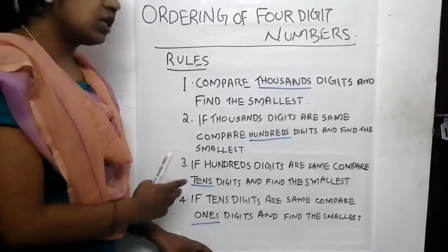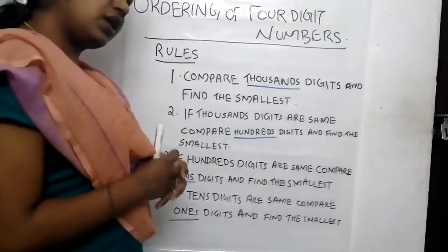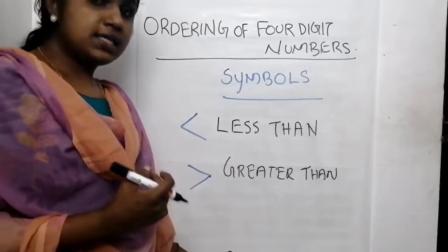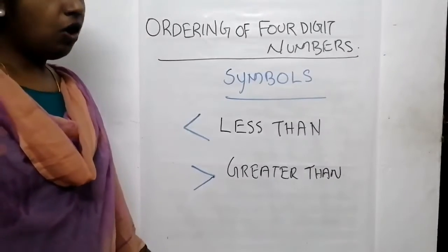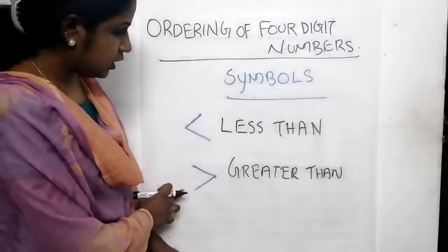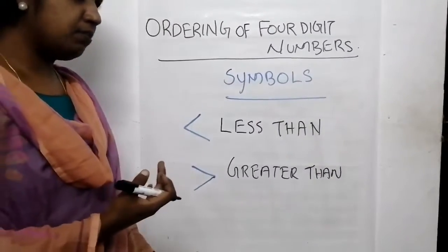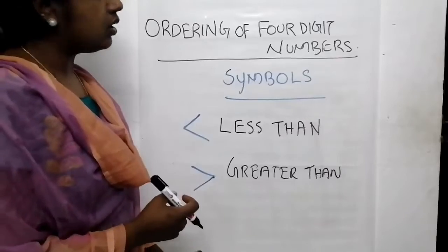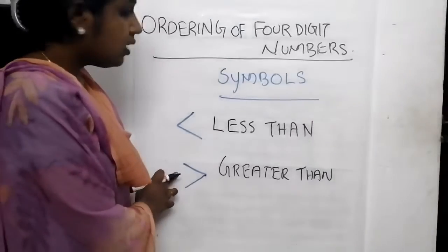These are the rules we used to compare numbers and find the smallest one. Before we start ordering, we have to see some symbols. These are the two important symbols in ordering. First one is less than and this one is greater than. This symbol is less than, and this symbol is greater than.